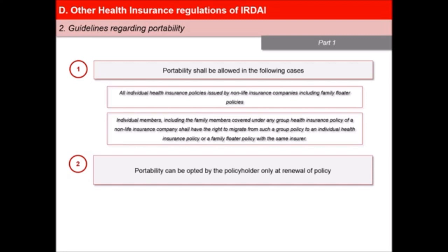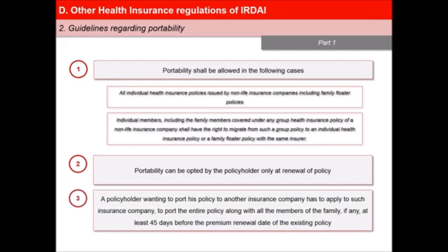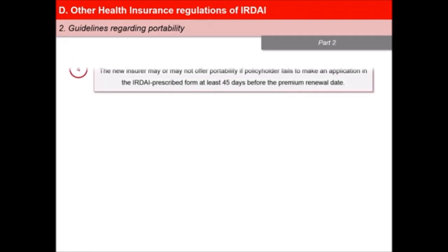Individual members will have the right to migrate from such a group policy to an individual health insurance policy or a family floater policy with the same insurer. Second, portability can be opted by the policyholder only at renewal of the policy. Third, a policyholder who wants to port his policy to another insurance company has to apply to such insurance company to port the entire policy along with all the members of the family, if any. This process should be done at least 45 days before the premium renewal date of the existing policy. Fourth, the new insurer may or may not offer portability if the policyholder fails to make an application in the IRDAI prescribed form at least 45 days before the premium renewal date.